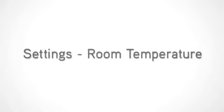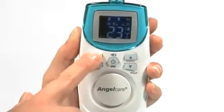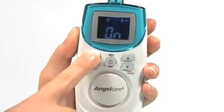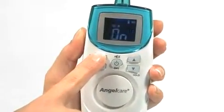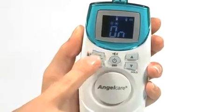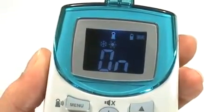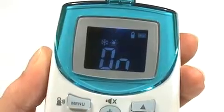To program the Room Temperature function, which monitors the temperature in the baby's room, press Menu until the nursery unit flashes with the sun and snowflake icons. Choose On or Off using the arrows. Here, we'll choose On.